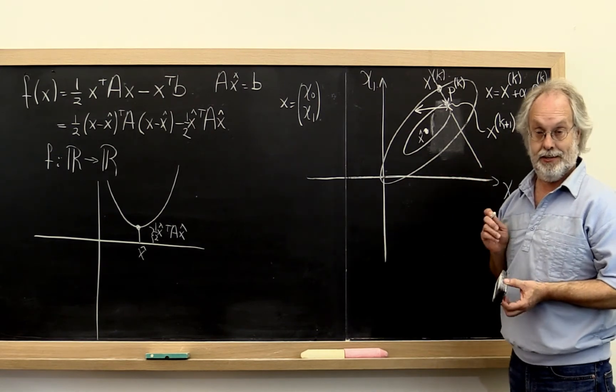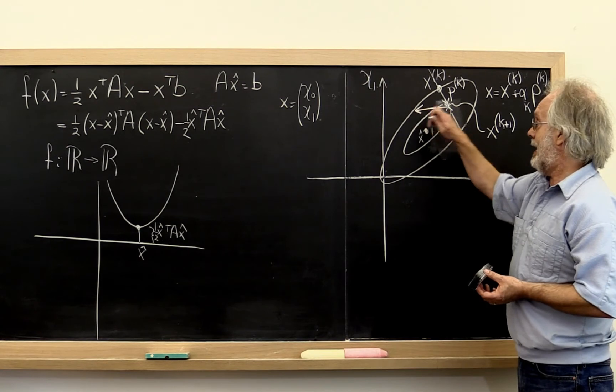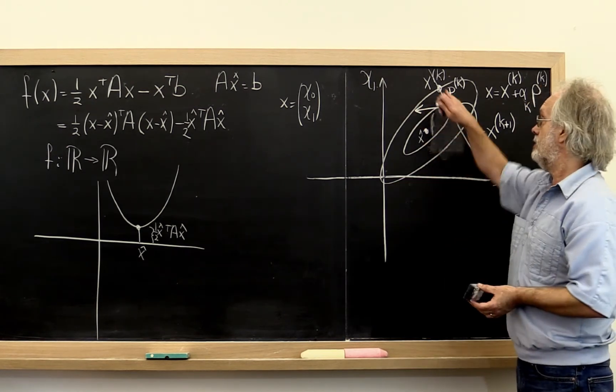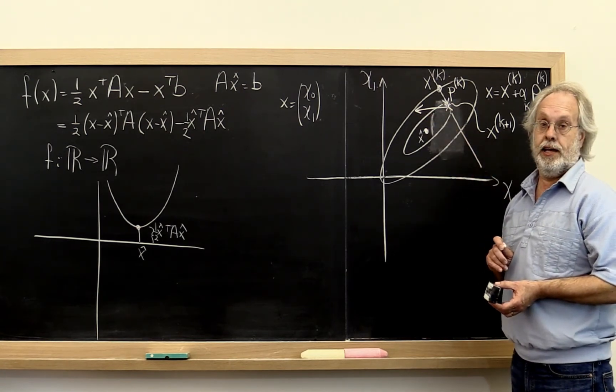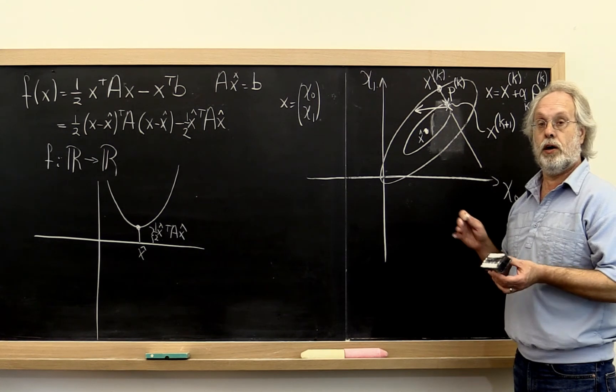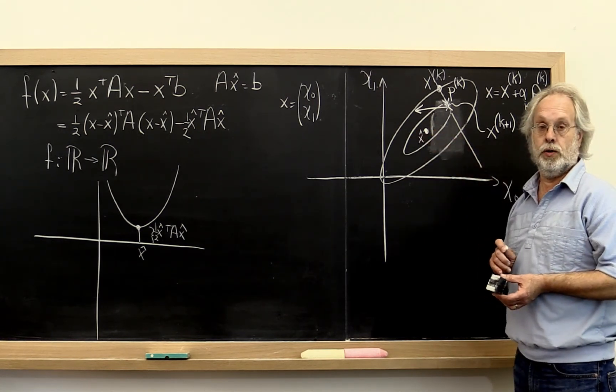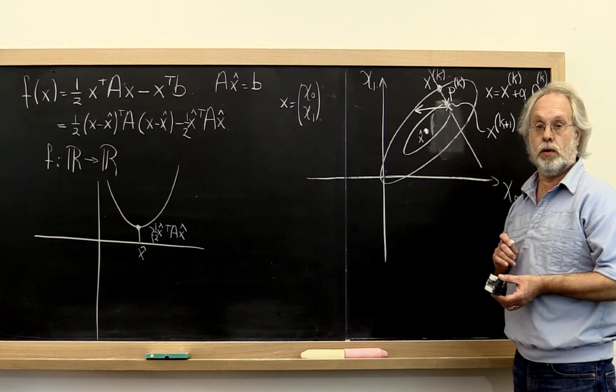Every time hopefully we pick a search direction that actually has a direction where you decrease. That's why it has to be a descent direction. And then at every step we actually decrease the value of the function at the points that we find. And then unless we're not very smart about how we pick our search directions, eventually we can get arbitrarily close to the solution that we're after.